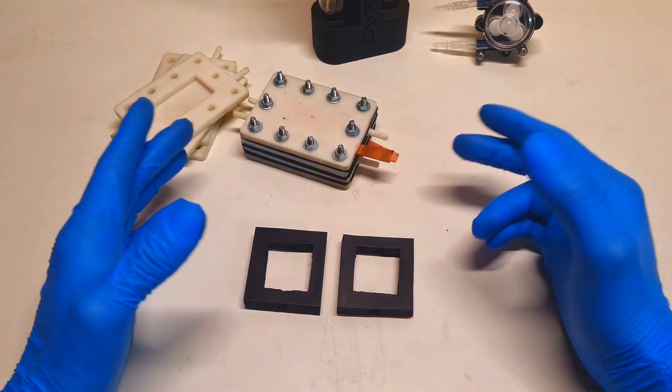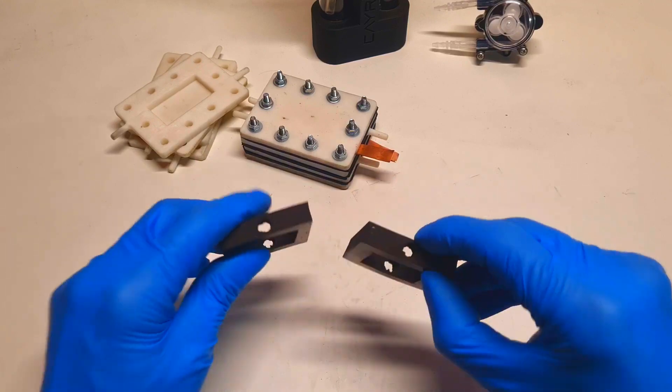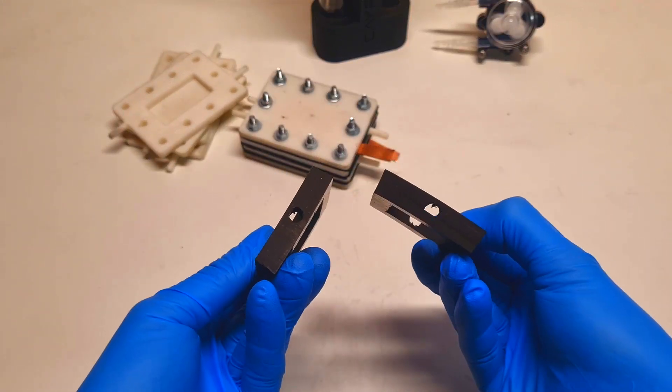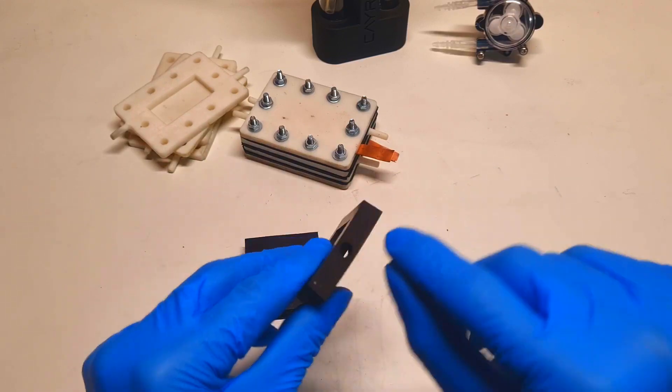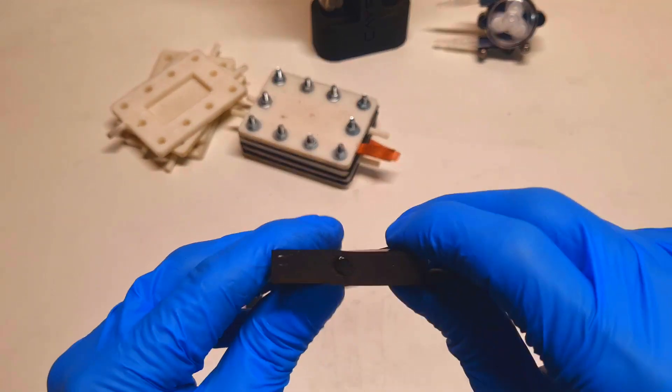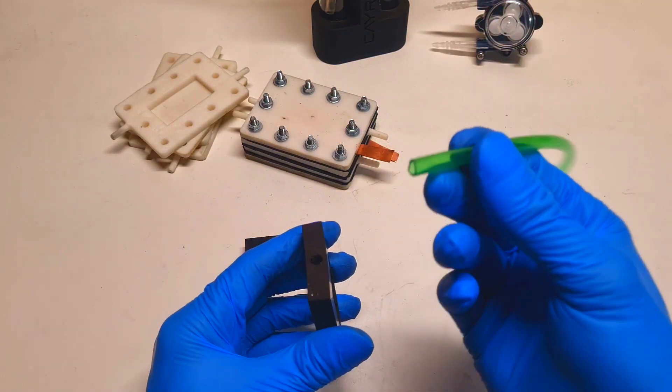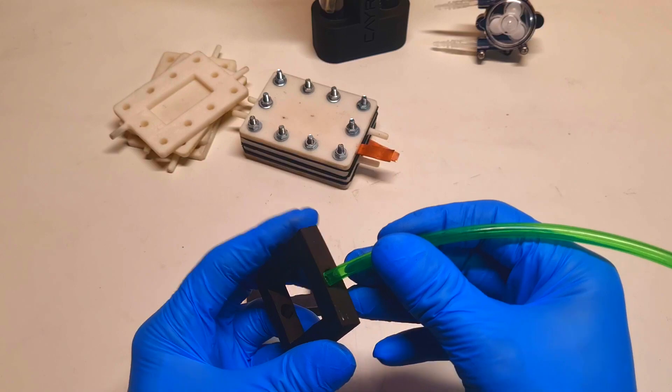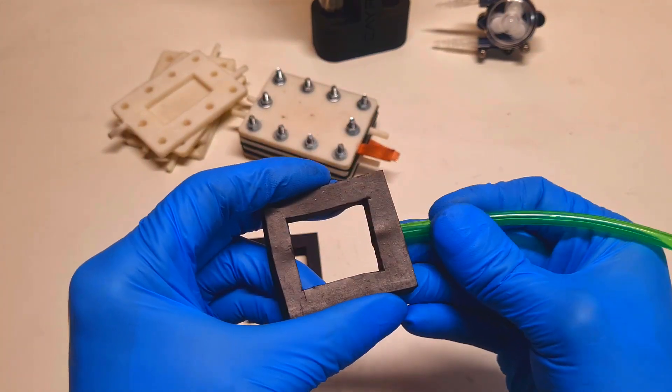Because this battery will be a flow type, I have holes for the pipes. The size of the holes is 6mm, which is the same size as this pipe. You put this pipe into this hole, like so.